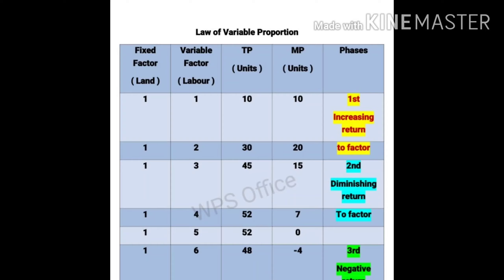When labor increased from two to three, production increased to forty-five. Forty-five minus thirty equals fifteen — that is the MP. Then fifty-two, and forty-eight. Initially production increased at an increasing rate — MP went from ten to twenty. Then it increases but at a diminishing rate — this is the second phase. Finally production, that is MP, becomes negative — this is the third phase.